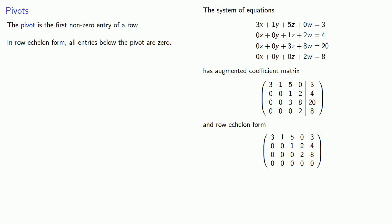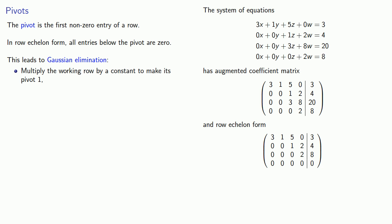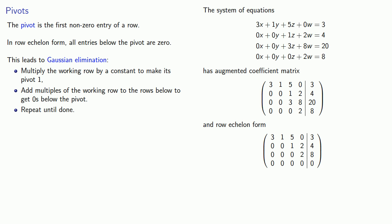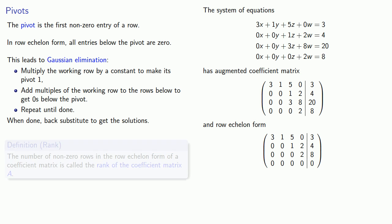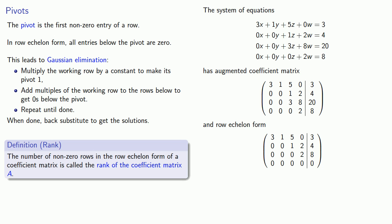This leads to a process known as Gaussian elimination. We'll have a working row, multiply it by a constant to make the pivot 1, and then add multiples of this row to the rows below to get zeros below the pivot. We repeat this process until our matrix is in row echelon form, at which point we can use back substitution to find all solutions. After this process, some rows may consist of all zeros. The number of non-zero rows in the row echelon form of the matrix is called the rank of the coefficient matrix.